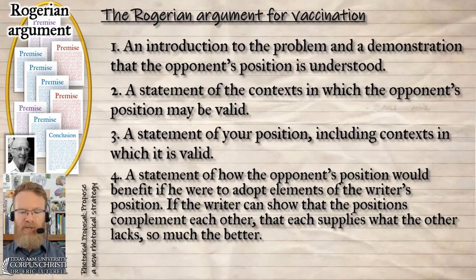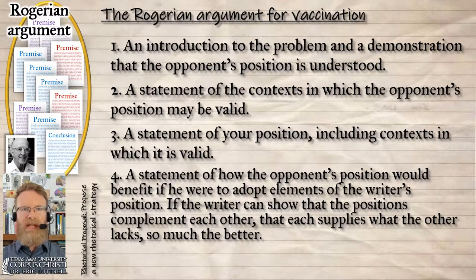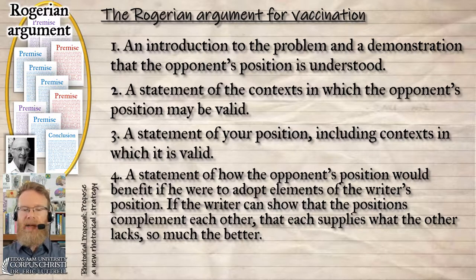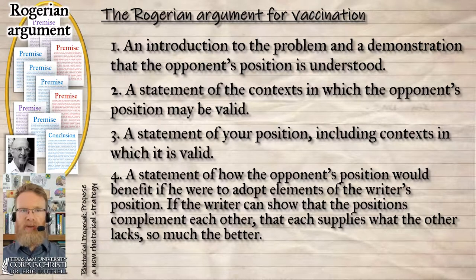So let's look back at the Rogerian argument as laid out in Young, Becker, and Pike's book, 'Rhetoric, Discovery, and Change.' You want to introduce the problem and demonstrate that the opponent's position is understood — you're not using a straw man argument. Then give a statement of the context in which the opponent's position might be valid: general warrants that might be valid sometimes, data that might be accurate but just partial — point that out before saying there's other data we have to factor in. Then give a statement of your position, including the context in which your position is valid, and then give a statement of how the opponent's position would benefit if they were to adopt elements of the writer's position. If the writer can show that the positions complement each other, that each supplies what the other lacks, so much the better.